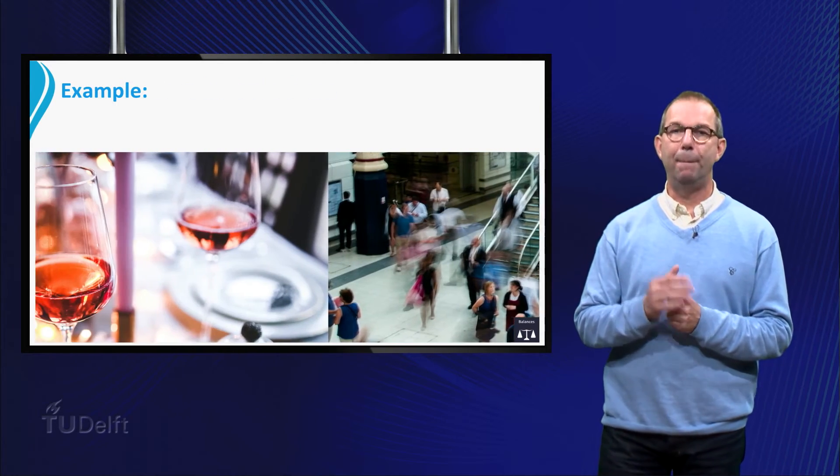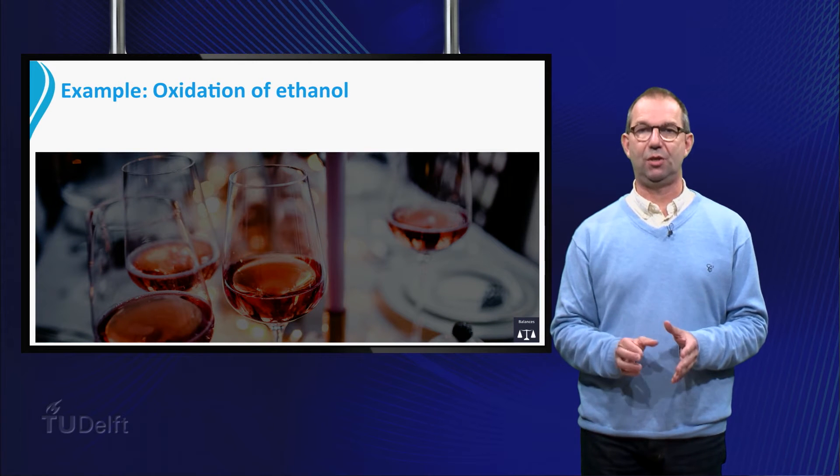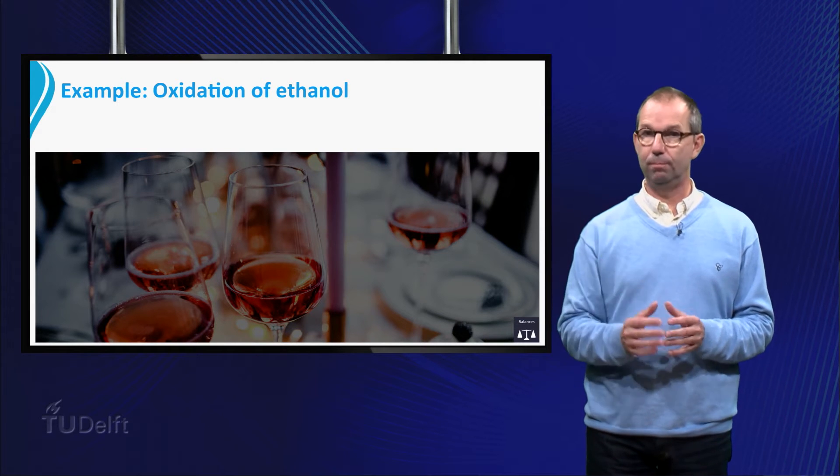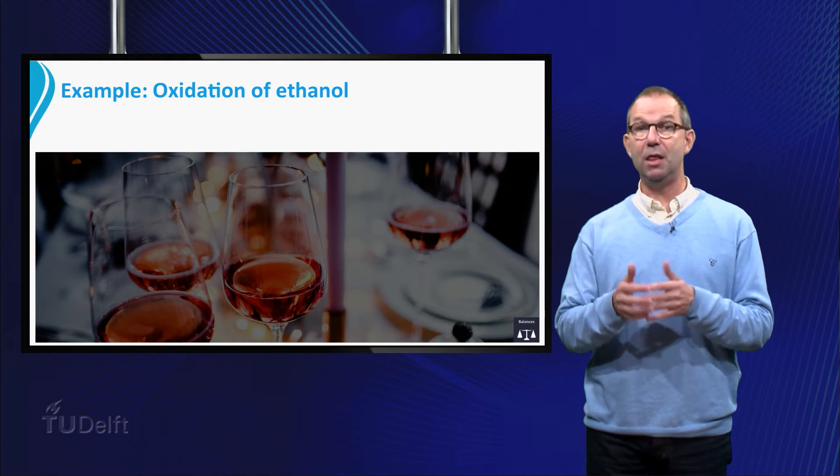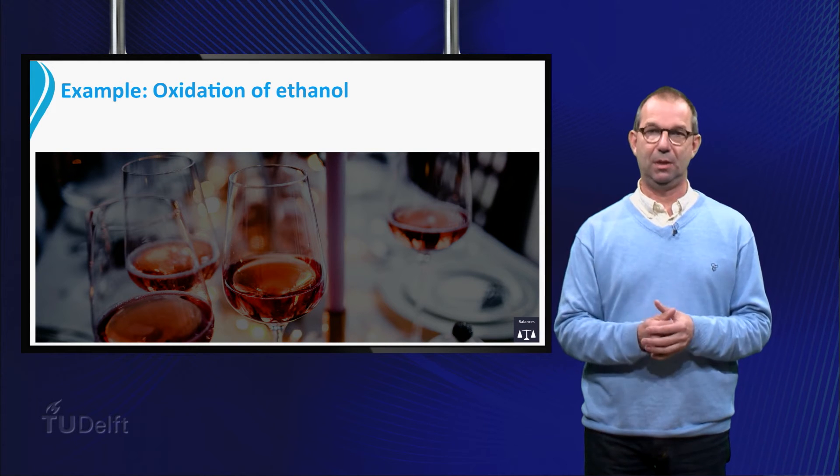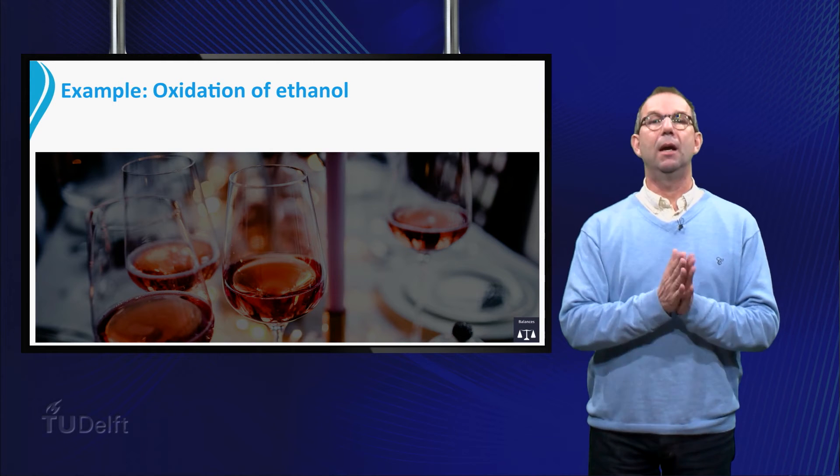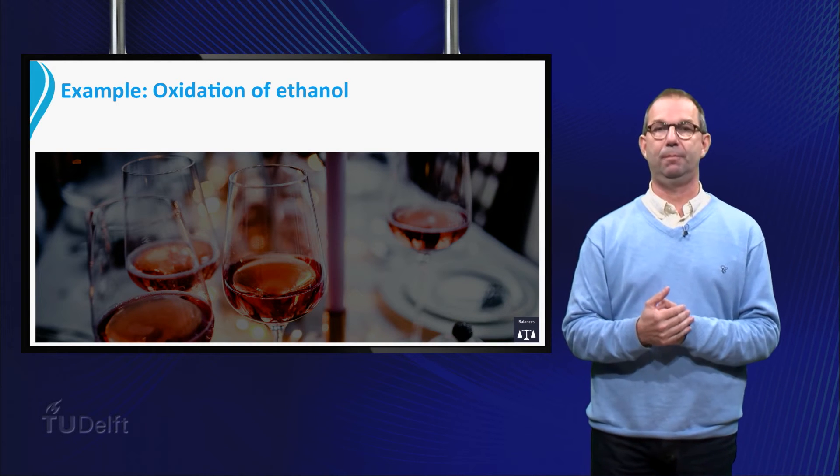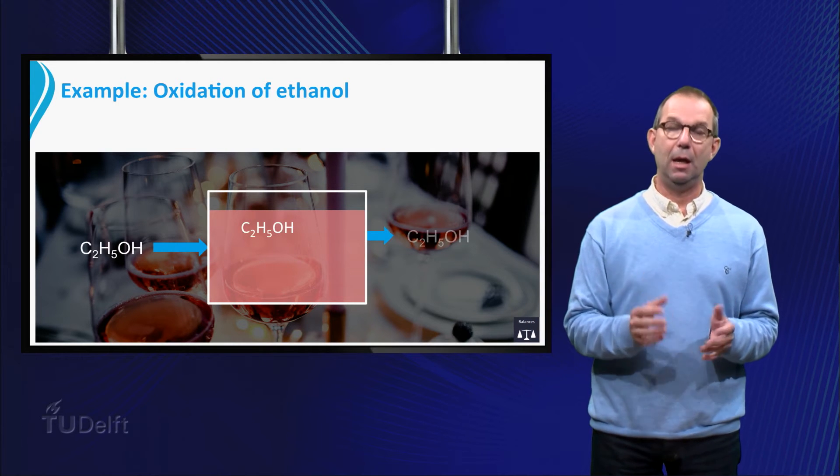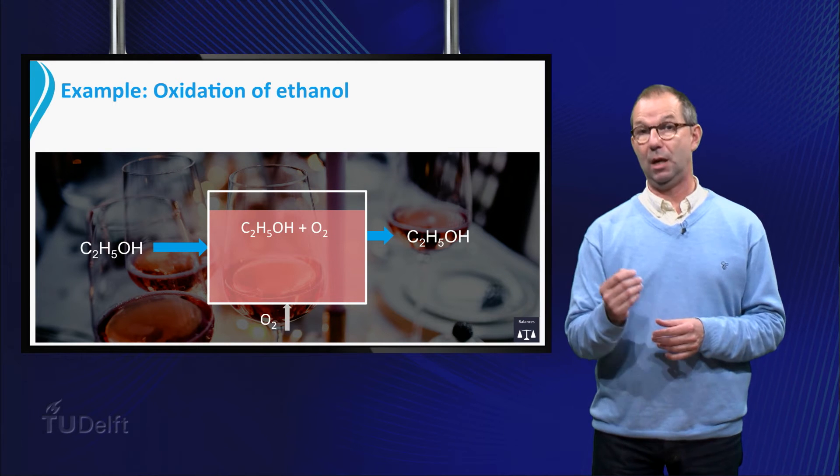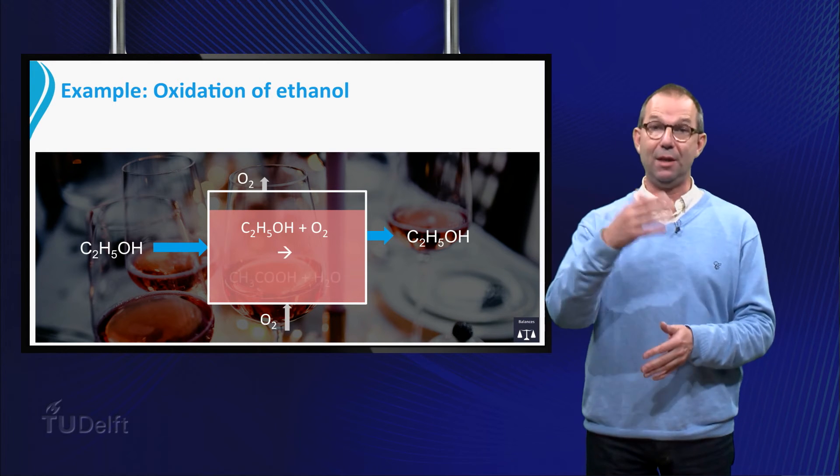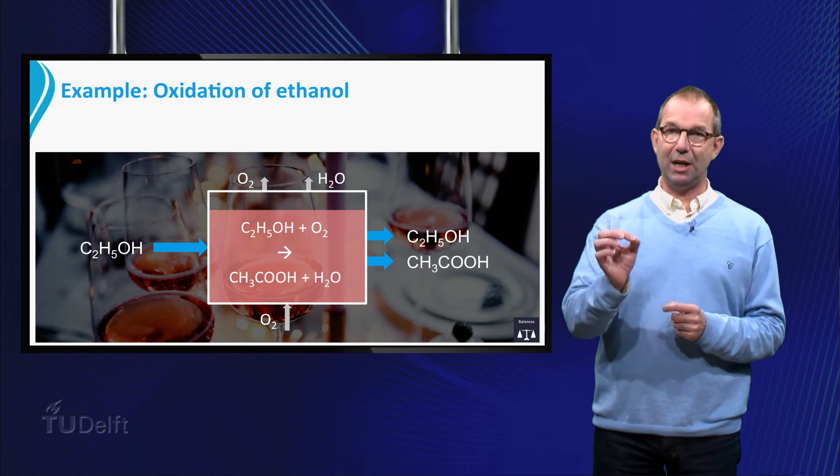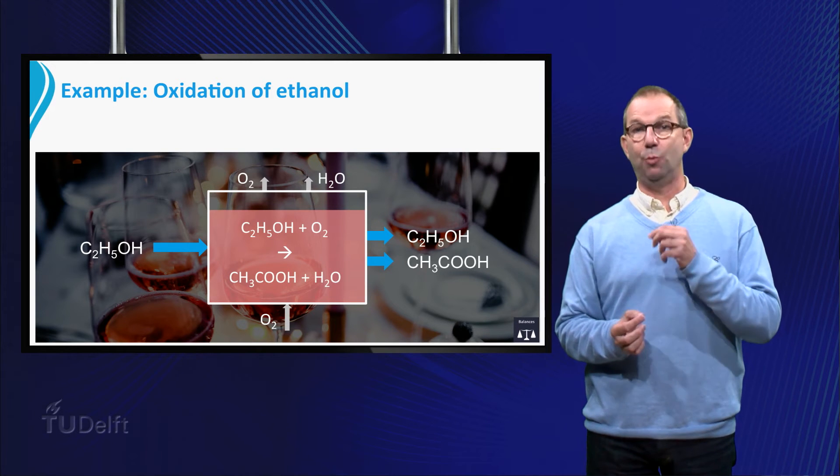As said before, a balance can be applied to all kinds of processes. For instance, take a bottle or glass of wine that is left open too long. The ethanol, C2H5OH, in the wine is oxidized into acetic acid, CH3COOH. In this lecture we will analyze the process with a continuous in and out flow of components. Ethanol flows in and out of the vessel. At the same time, oxygen flows into and out of the vessel, while in the reactor the ethanol is converted into acetic acid and water. The sketch shows the general picture of the in and out flows as well as the production.